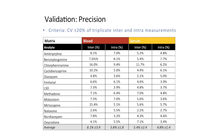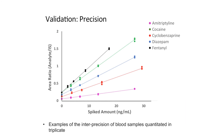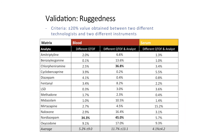All of these were well within the validation criteria. Since it's always easier to get a feel for precision visually, this is an example of the inter-precision of a blood sample containing five analytes quantitated in triplicate.